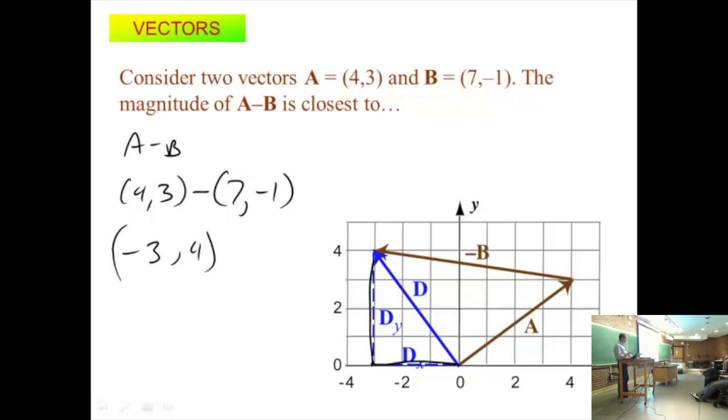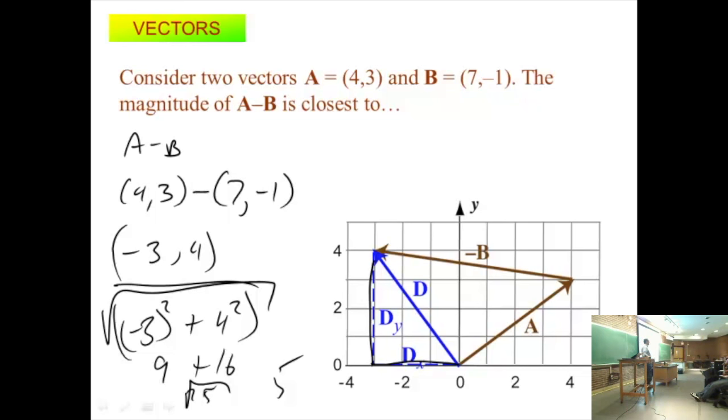What's the question asking for? A number, right? The magnitude is going to be negative 3 squared plus 4 squared, all square rooted. This is 9 plus 16, which is 25. Square root of 25 is 5. So the magnitude is 5. The length of this is 5 units, whatever the units are.